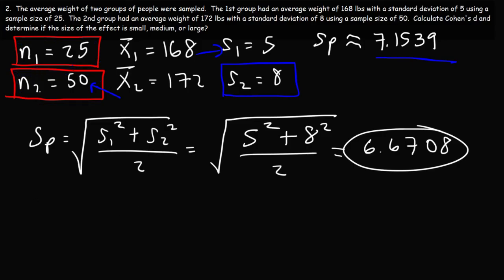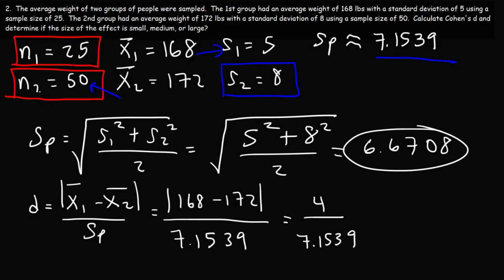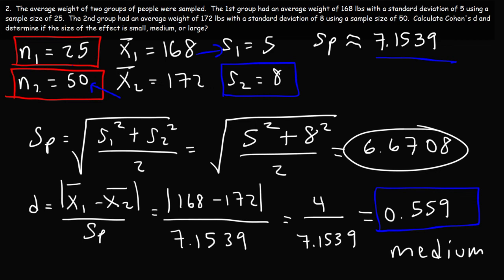Now let's calculate Cohen's D: it's the absolute value of the difference between the two means divided by the pooled standard deviation. X-bar 1 is 168, X-bar 2 is 172, and the pooled standard deviation is 7.1539. 168 minus 172 is negative 4, but with the absolute value that becomes positive 4. So we have 4 divided by 7.1539, which gives us approximately 0.559. This is close to 0.5, so we can say the size of the effect is medium. Remember: 0.2 for small, 0.5 for medium, 0.8 or more for large.